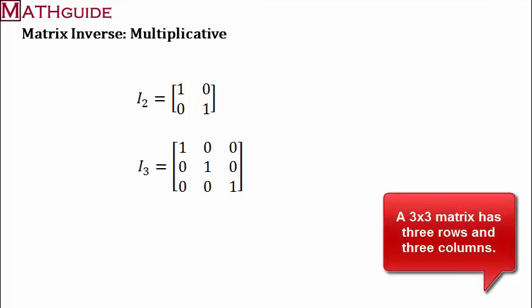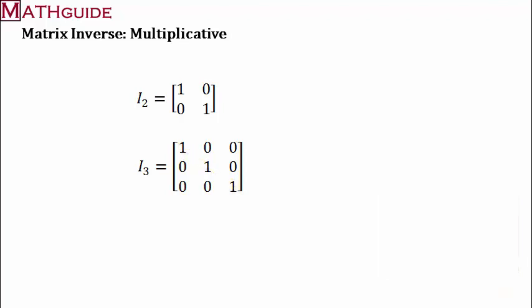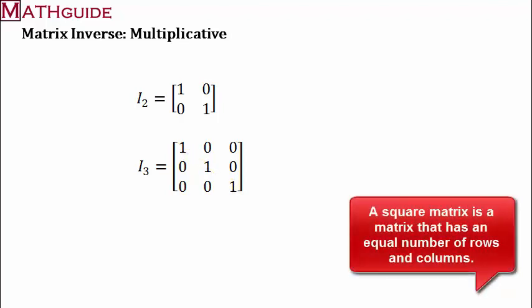Here's a 3x3 identity matrix. Again, you'll see the ones along the diagonal and zeros elsewhere. And you'll notice that we're only talking about square matrices. In other words, the number of columns and rows have to match.